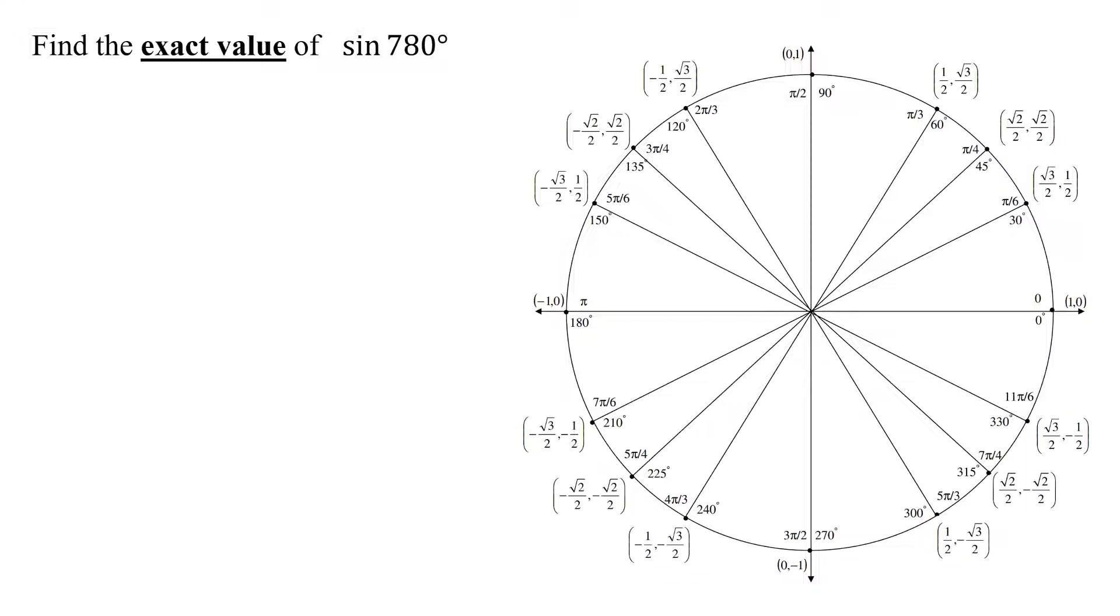So I'm going to have to use coterminal angles in order to get an angle on my unit circle. So we take a given angle of 780 degrees.